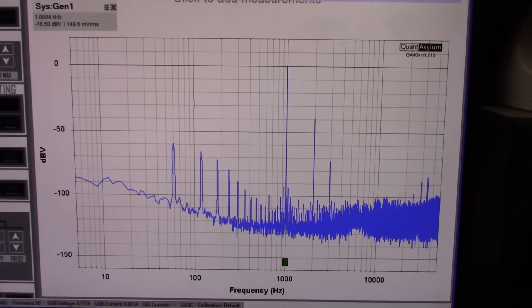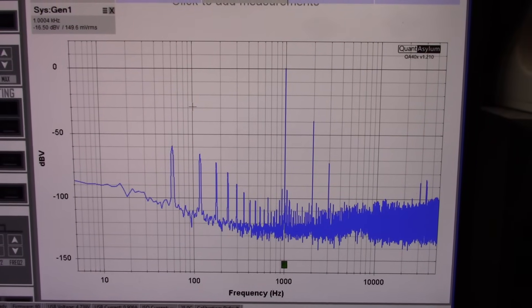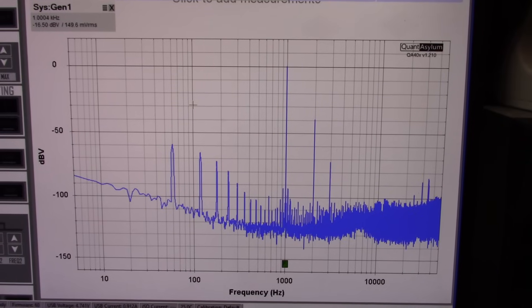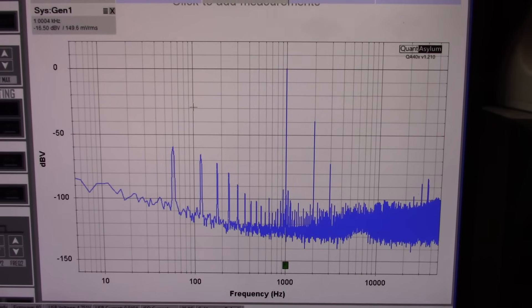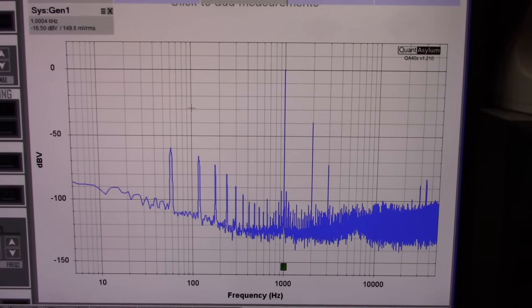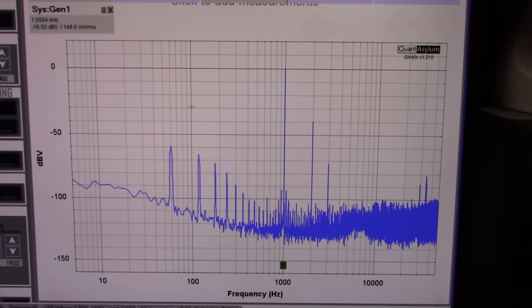Now when I graph the distortion curves of this preamplifier, I'll also load its output down with a 10k resistor. Because a lot of amplifiers won't have 100k input impedance. Some of them will have lower input impedance. So it's important to test that as well.